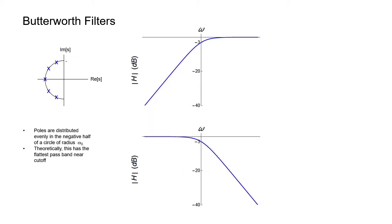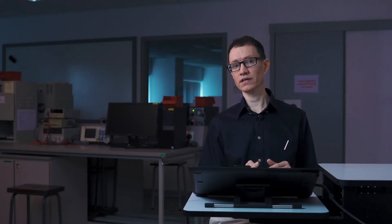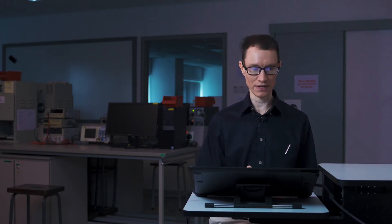In a Butterworth filter, the poles are distributed evenly in the negative left half of the S-plane. The radius of the circle around which the poles are distributed is given by omega-0, where omega-0 is the corner frequency of the filter. For example, if we have an odd number of poles — in this case 5 — one of the poles is going to be real and the other four are going to be complex. If we had an even number of poles, then all of the poles would have been complex.